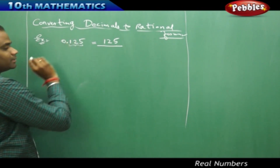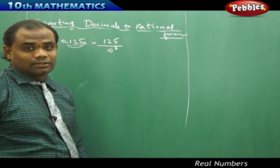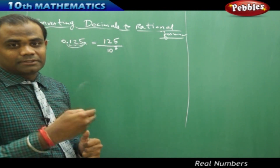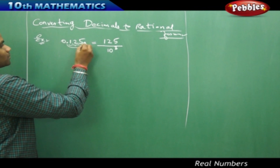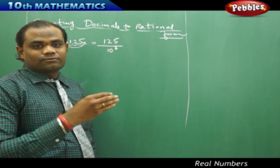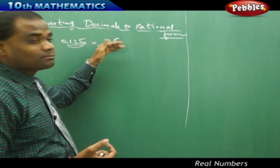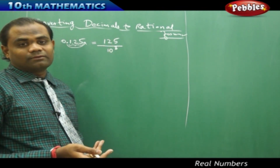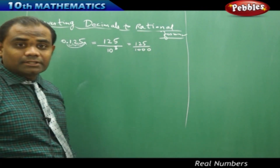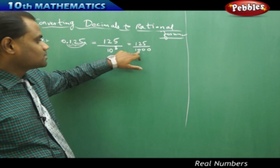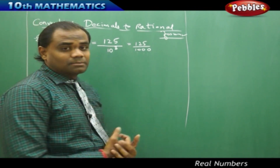0.125 can be expressed in rational form by writing whatever is after the decimal, which is 125, and because I want to move the decimal three units to the right, I divide by 1000. Moving the decimal to the right makes me divide by 10 each time — three steps means 10 power 3. So I get 125 by 1000, which is a rational number in P by Q form with Q being 1000.